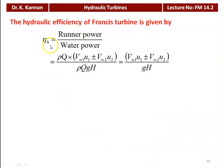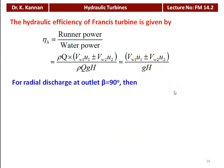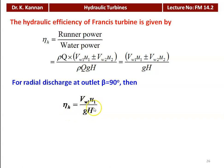The hydraulic efficiency of the Francis turbine: eta_h = runner power / water power = rho·Q·(Vw1·u1 ± Vw2·u2) / (rho·Q·g·H), which simplifies to (Vw1·u1 ± Vw2·u2) / (g·H). For radial discharge when beta = 90°, the hydraulic efficiency equals Vw1·u1 / (g·H). This equation is used in the majority of problems where radial discharge is specified.